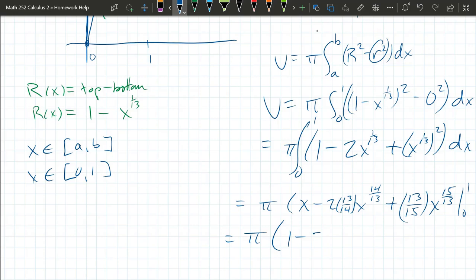But we plug in 1, we have 1 minus 2 times 13/14ths. Now 1 to any power is 1. And 1 to any power is 1. So those x's just disappear. Times 1.